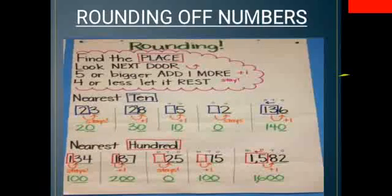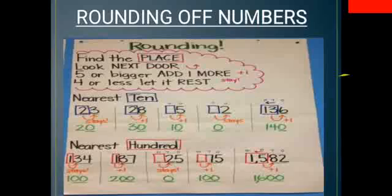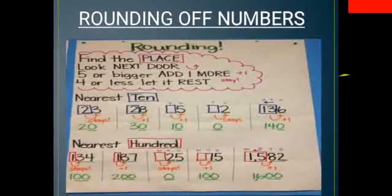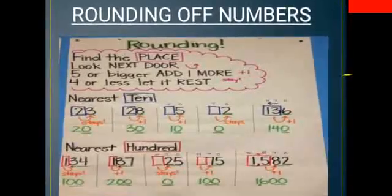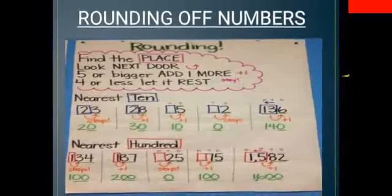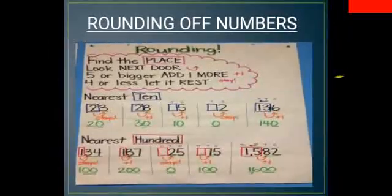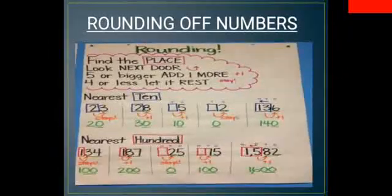This means if the number is having unit place as five or more than five then we add one to the preceding number. And if we have four or less than four on the unit place then we have to write zero in the same place.